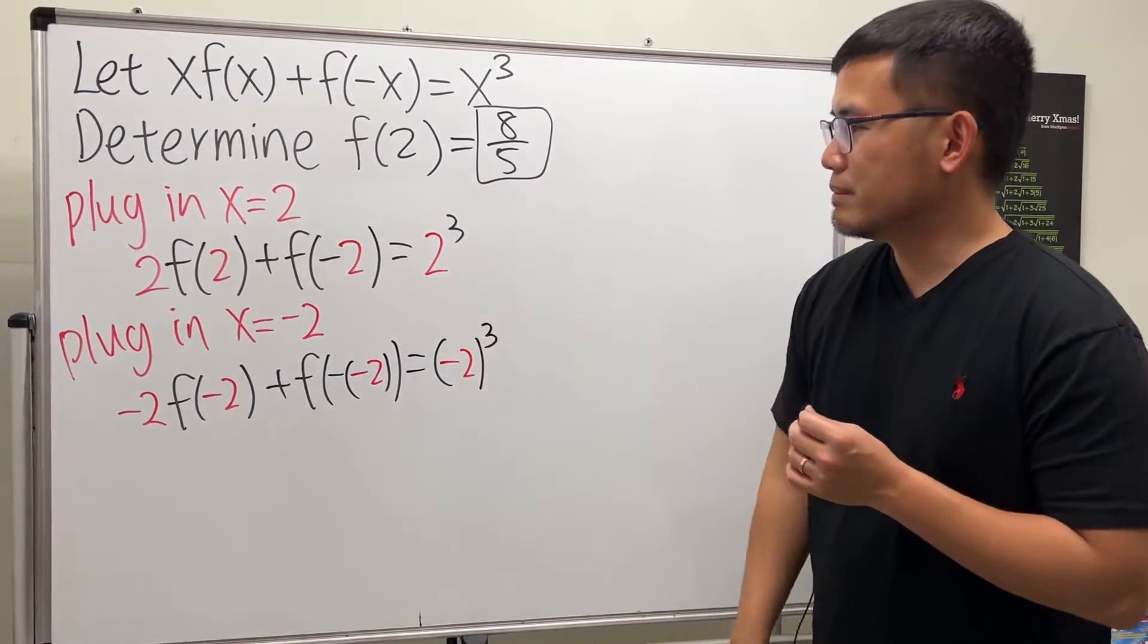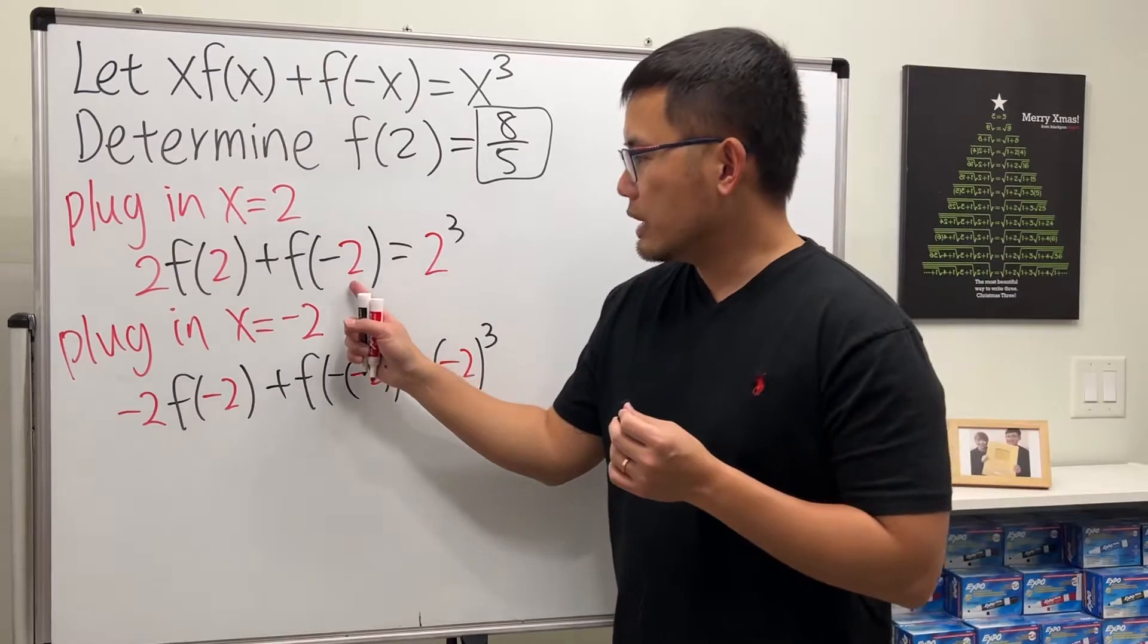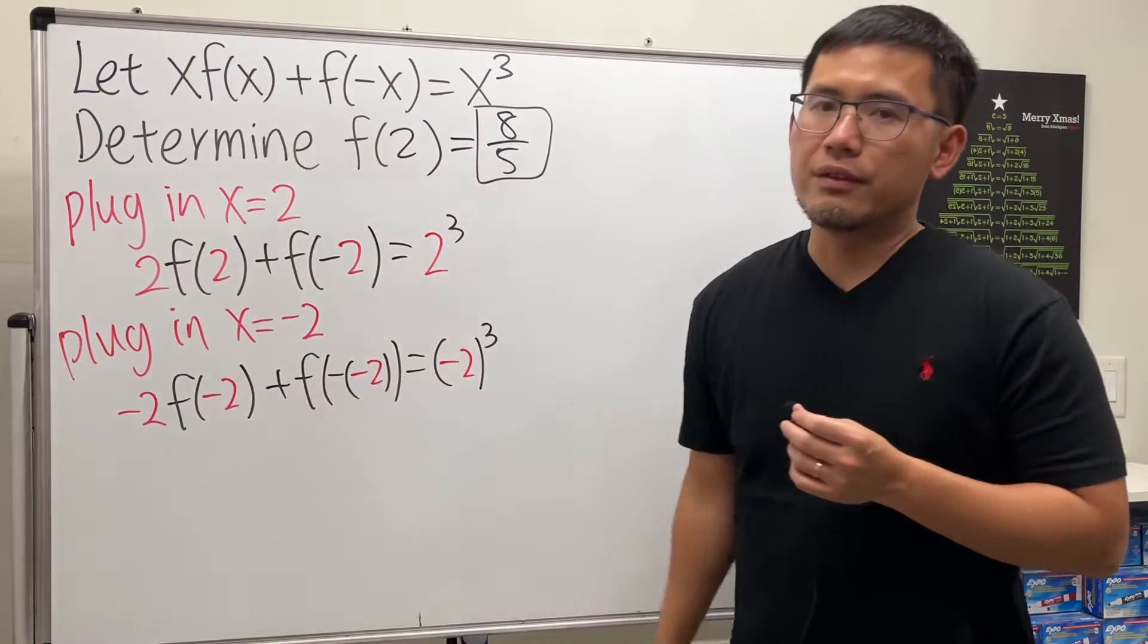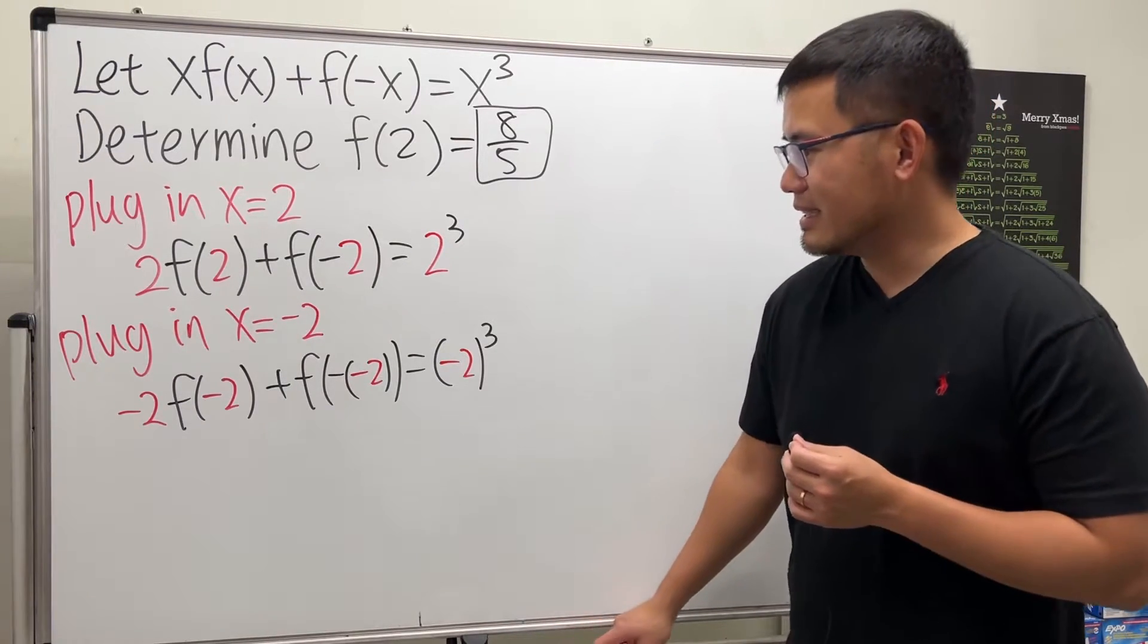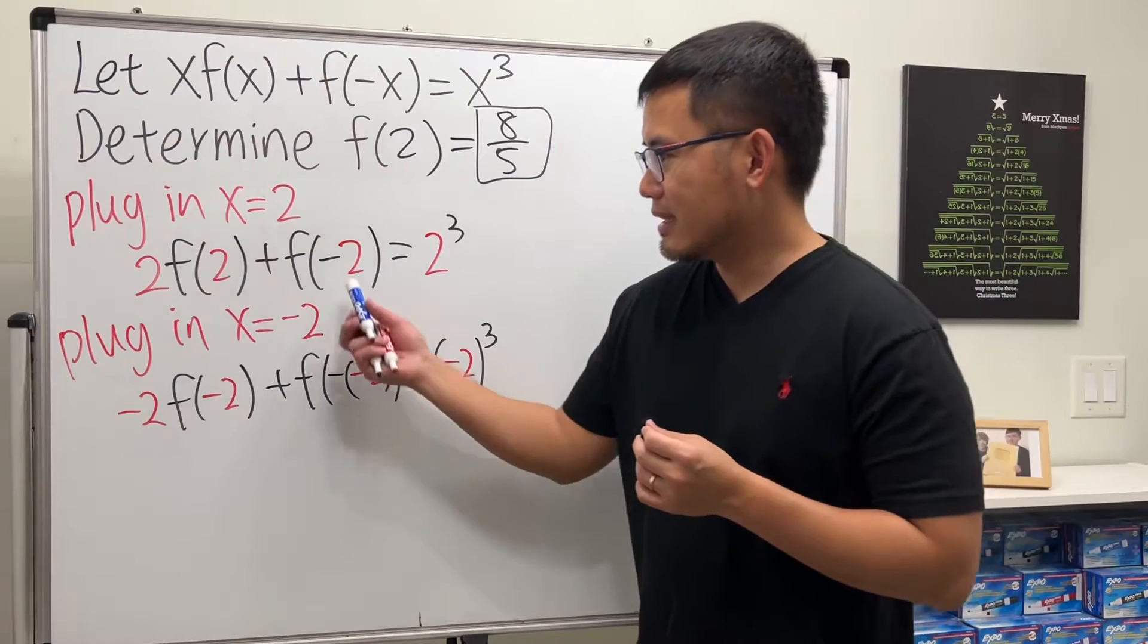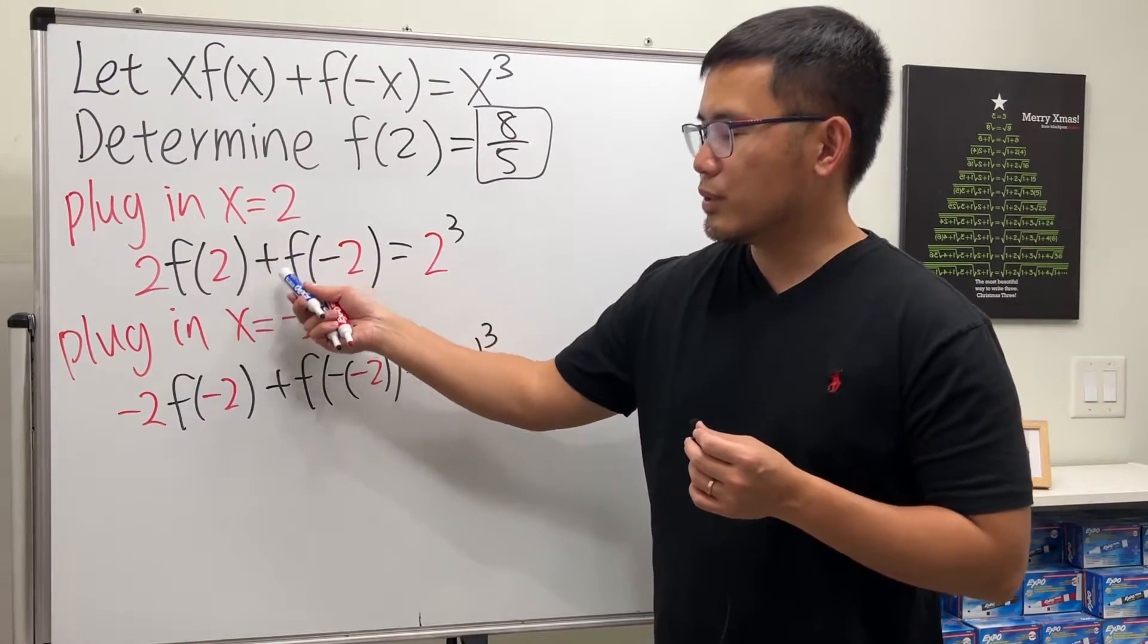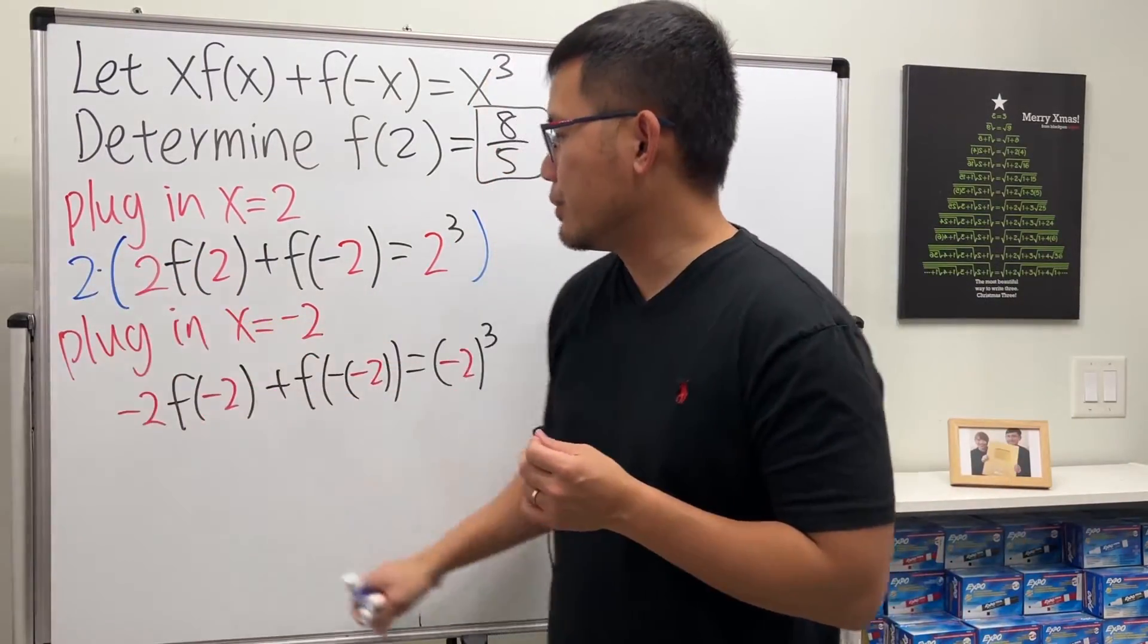So now you have two equations to work with and you want to get rid of the f(-2) so that you can solve for f(2). It's like a system of equations. This one is not so bad. How do we get rid of that? Here we have -2, so you want to have a 2 right here, right? Let's take the first equation and multiply everybody by 2.